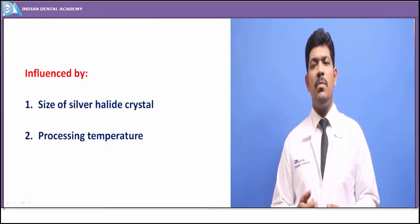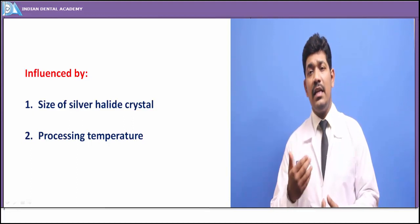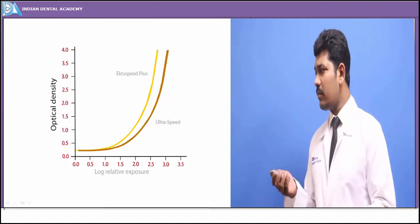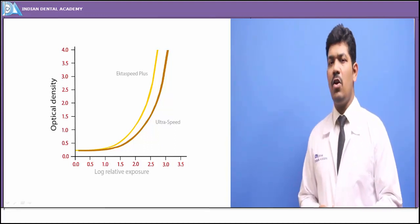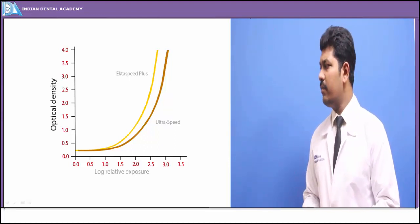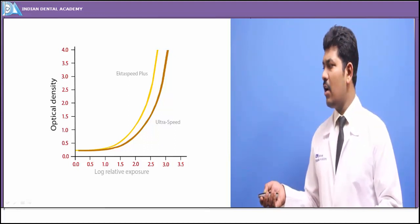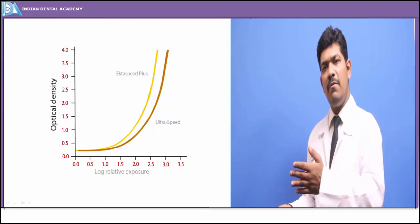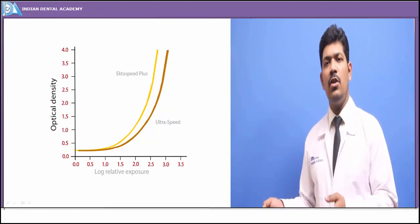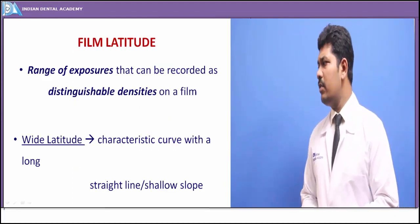Processing temperature follows the time-temperature method: an increase in temperature increases the rate at which a particular radiograph is developed. Looking at the characteristic curve, we can see how different radiographic speeds affect it — the ECTA speed or E-speed versus the ultra-speed D-speed. The D-speed characteristic curve moves away from the optimal curve, whereas the E-speed is much nearer to the required characteristic curve.